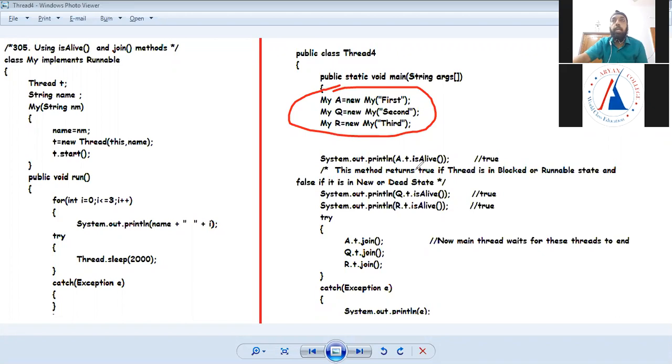Start now, run. Run state, a, q and r in the run state. isAlive method: if thread is running or blocked then returns true, if new or terminated returns false. So now three threads a, q and r are in running state, so this method will return true.